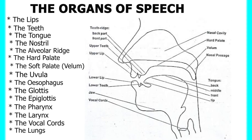So we have looked at the organs of speech involved in the production of speech sounds in English. We've gone through all the organs of speech and you now know the organs involved in producing speech sounds. The lips alone do not produce speech sounds — we have different organs working together. When you're speaking, take note of the organs of speech you use.